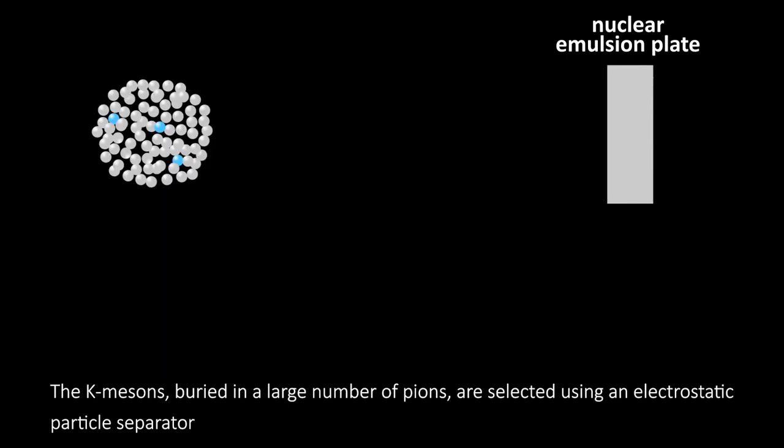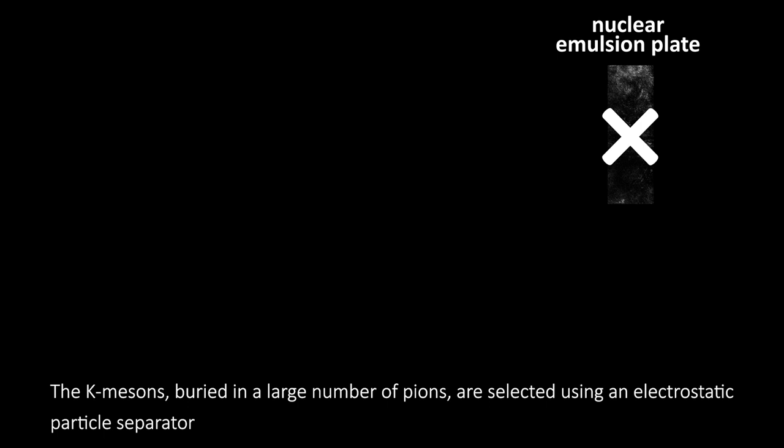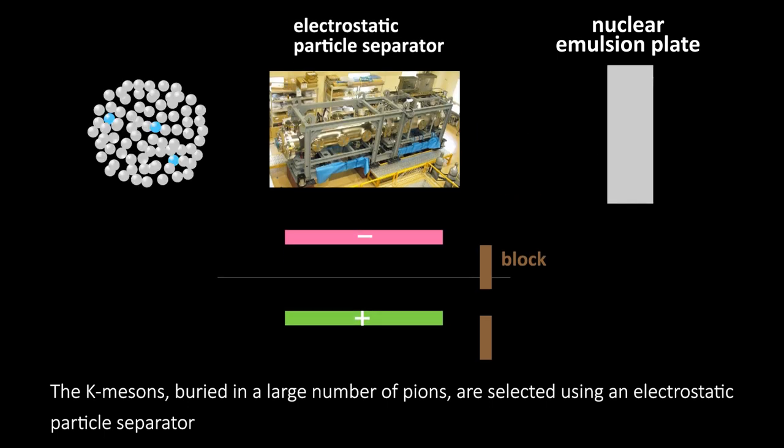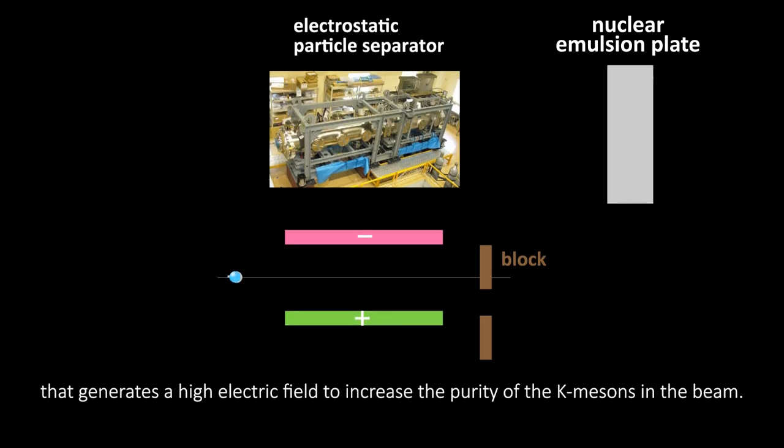The K-mesons, buried in a large number of pions, are selected using an electrostatic particle separator that generates a high electric field to increase the purity of the K-mesons in the beam.